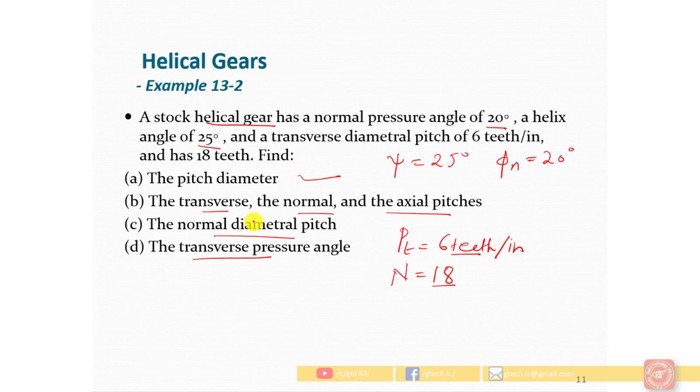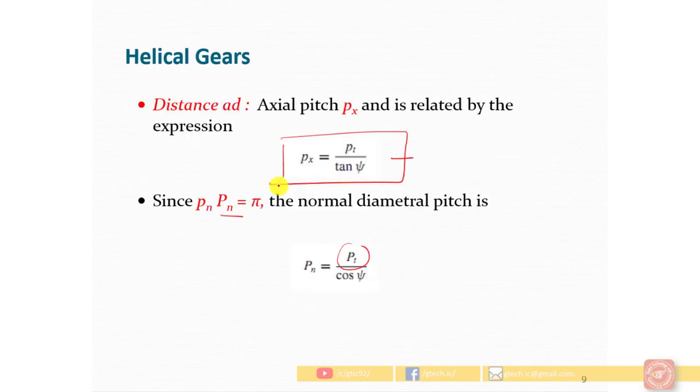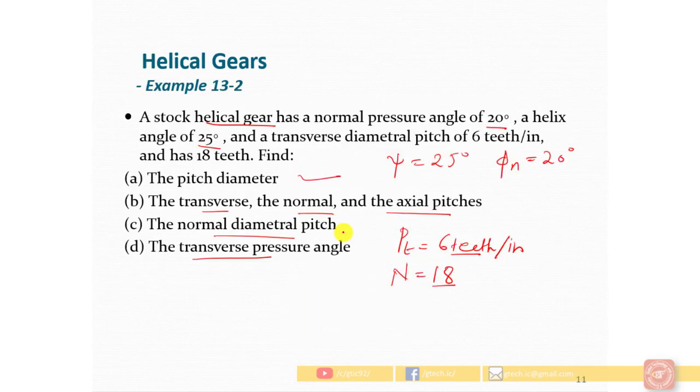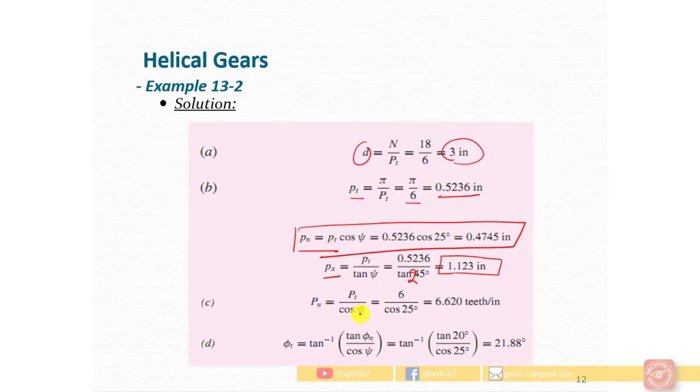Now for part C, the normal diametral pitch. The formula is PN equals PT over cos ψ, which is PD times cos ψ. So cos ψ at 25 degrees gives 6.620 teeth per inch.